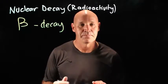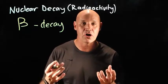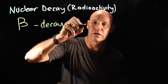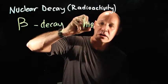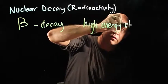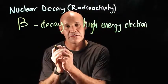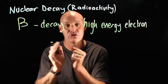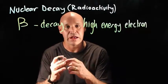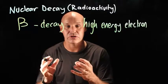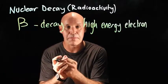Beta decay is when the nucleus releases a high energy electron. So a beta particle is a high energy electron. It does that because inside the nucleus a neutron splits into a proton and an electron — the electron gets ejected and the proton remains.